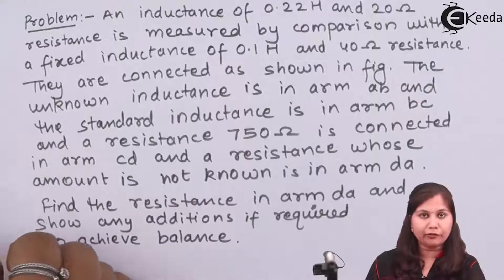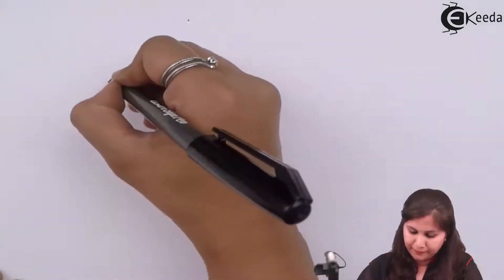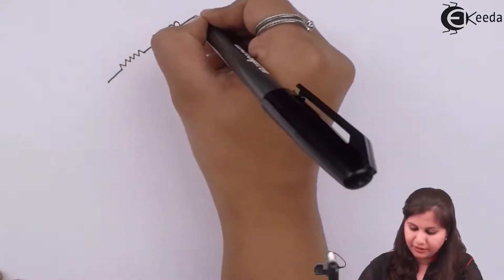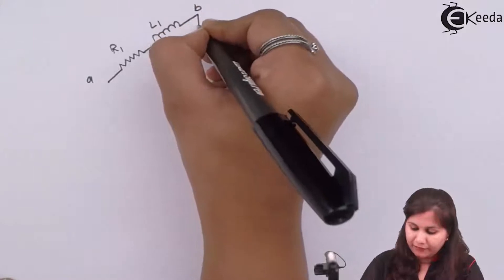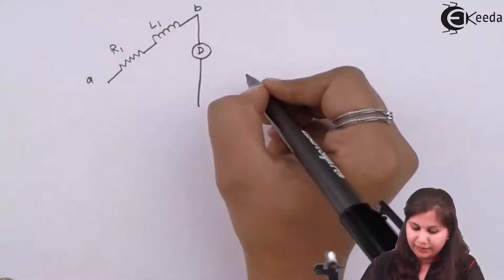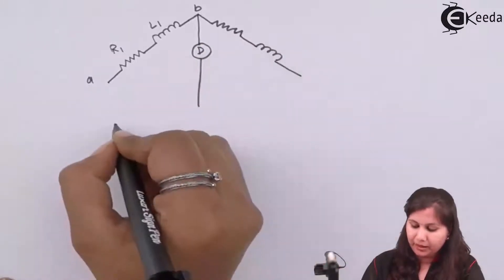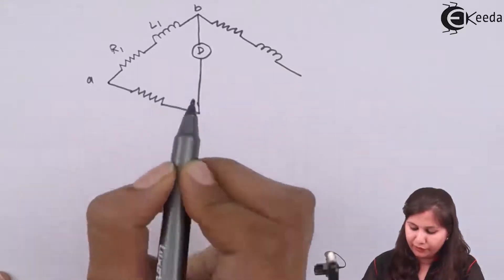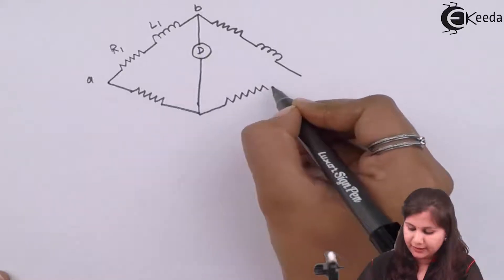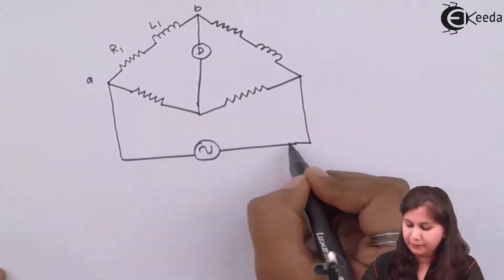So let's see the circuit for this bridge. We are having four arms in the bridge. Arm AB is having a resistance R1 and L1 which are connected in series. Then we are having a detector to obtain the balance condition. In Arm BC we are again having a resistance and an inductor. In Arm DA we are having a resistance whose value we want to find out, and in Arm CD we are again having a resistance.